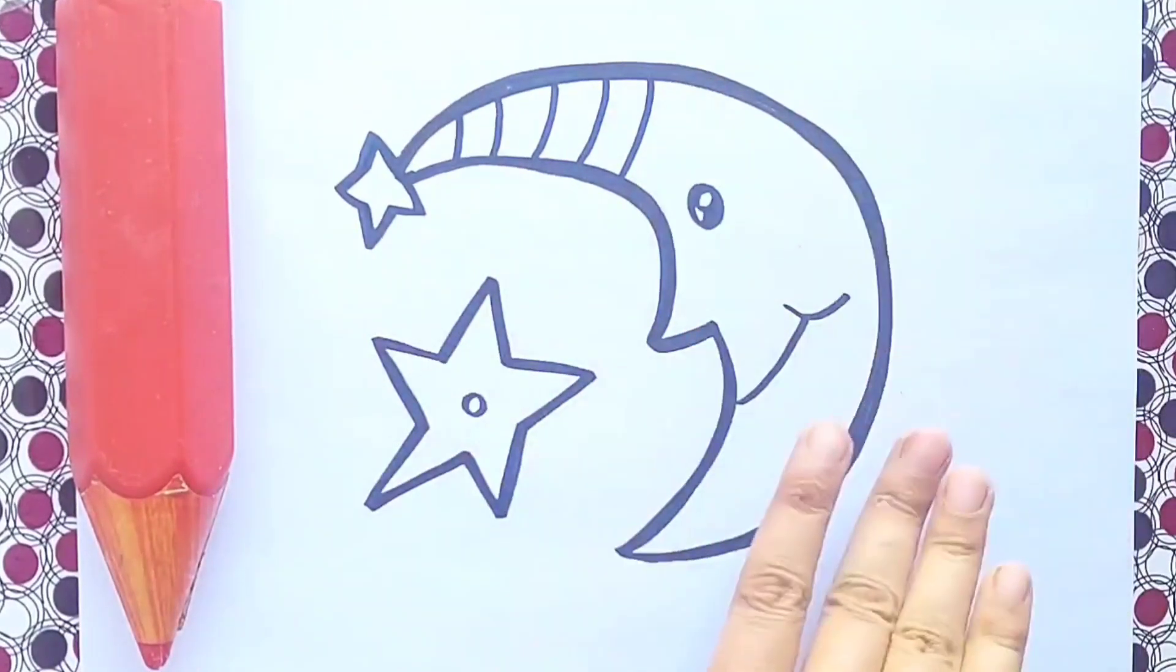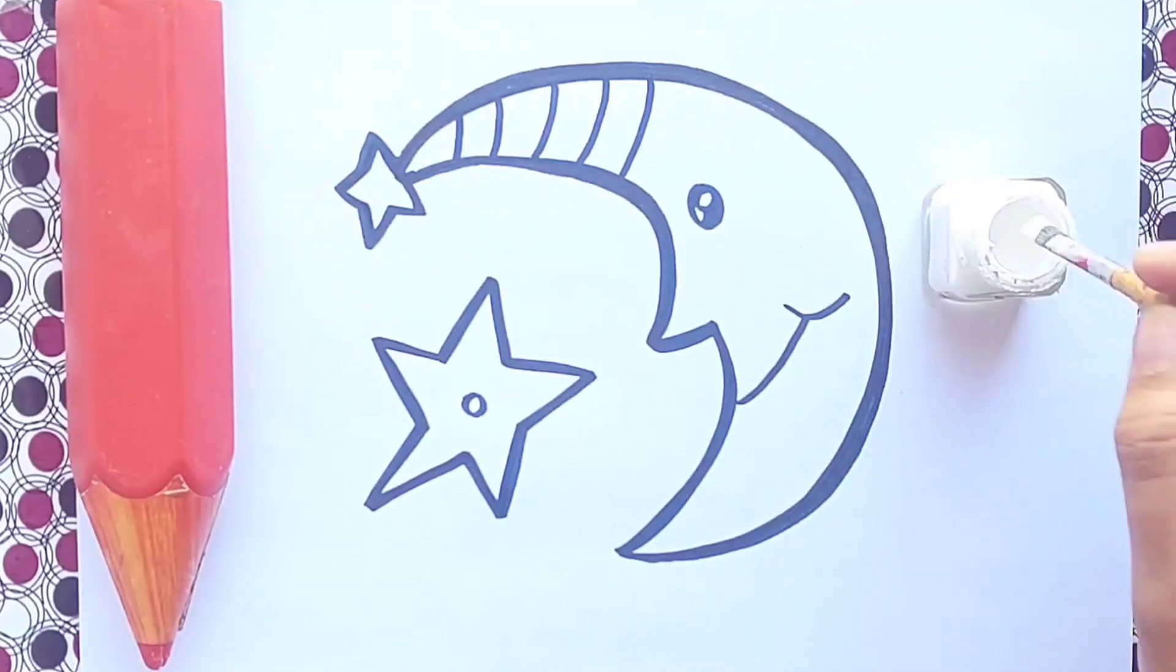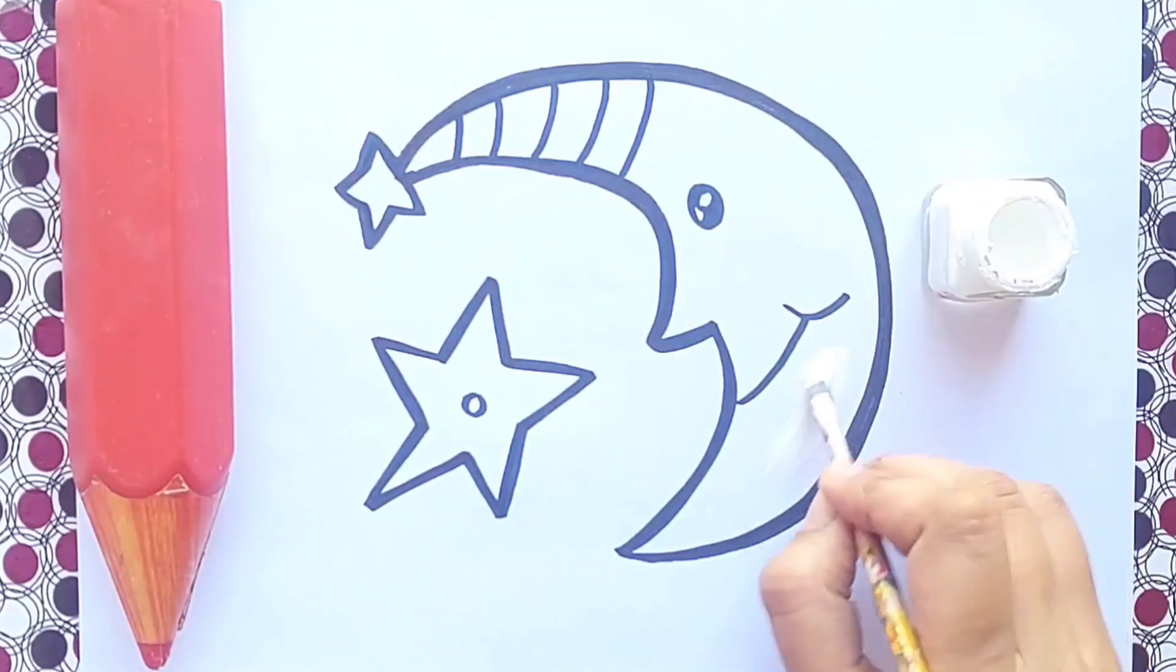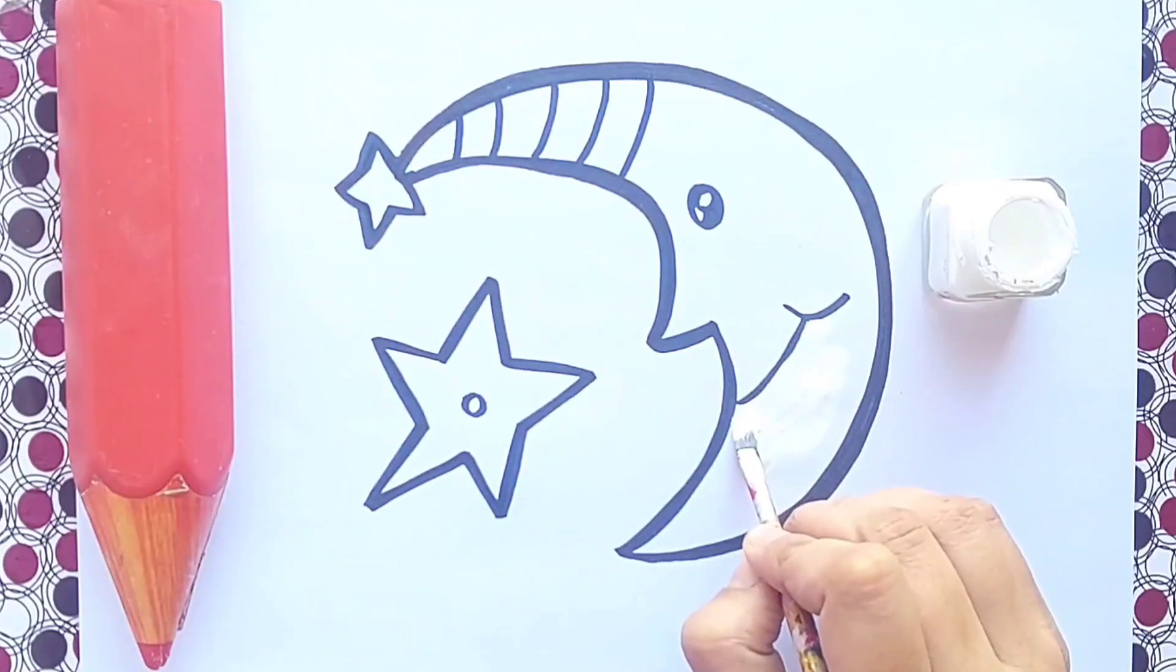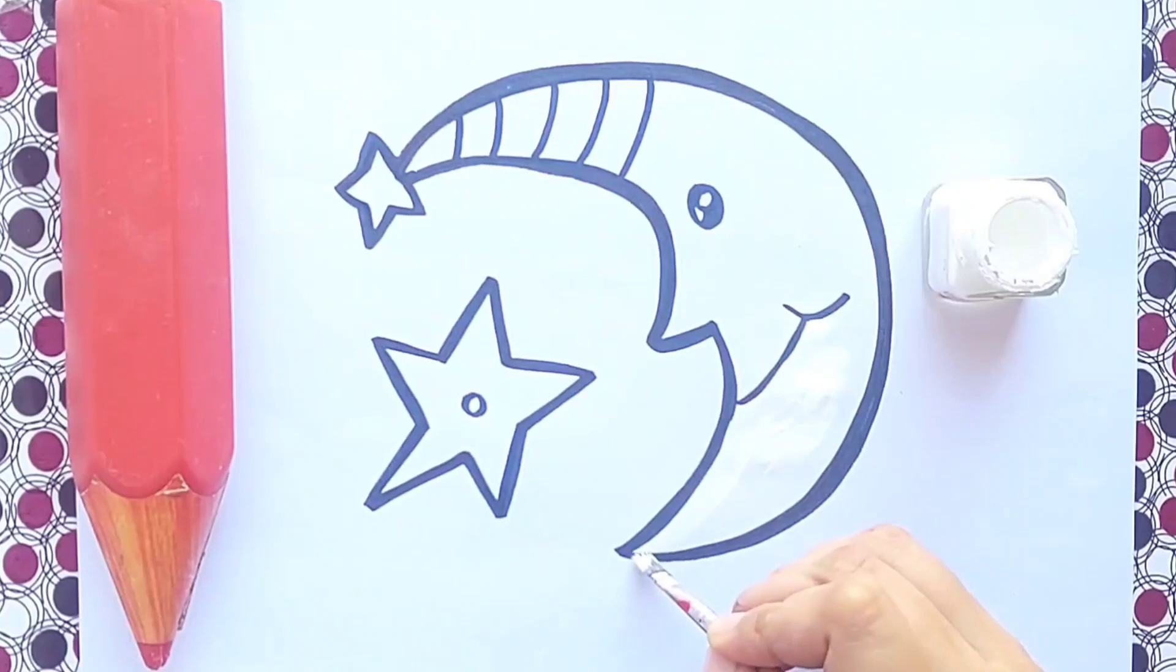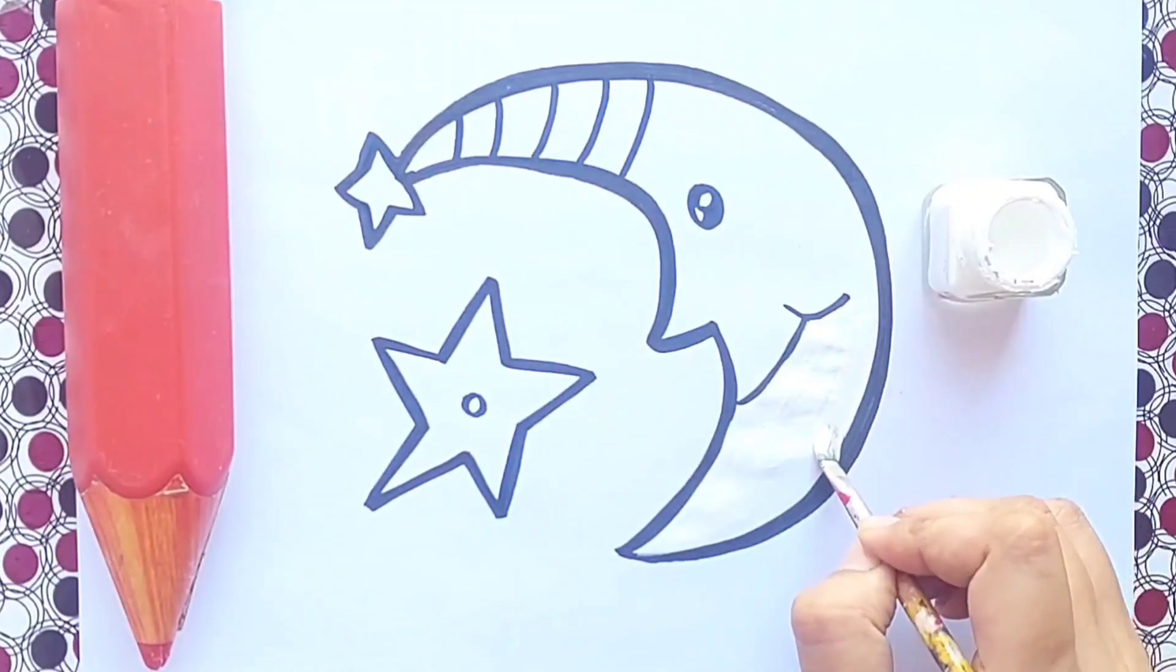Wow, our picture is ready! It's coloring time kids. I'm going to do white color in my moon. You can choose your favorite color for your moon. Grab your colors and paint with me kids.